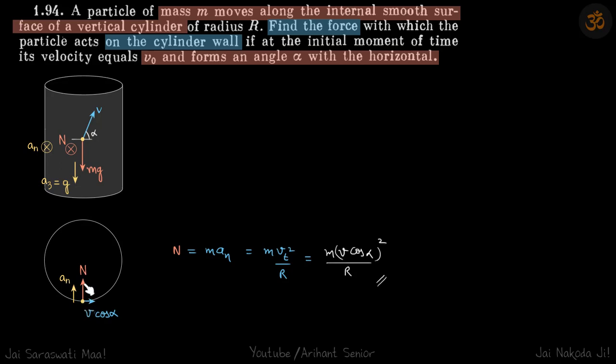...you can see that we have the normal reaction inside and the velocity component that is rotating around the cylinder is v cos α. So v cos α is the velocity with which it is rotating. Now you can just write force equal to ma on this particle. So force is N, acceleration is a_n...